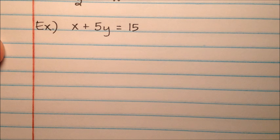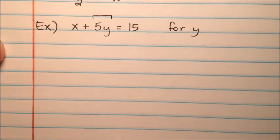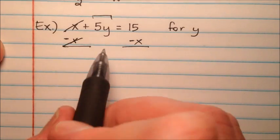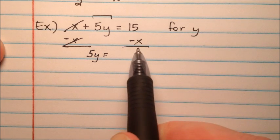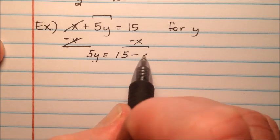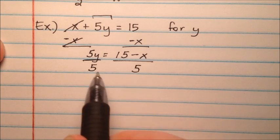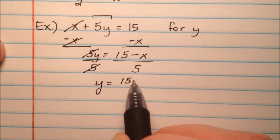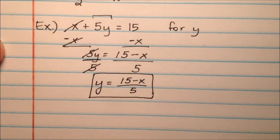In this next example, I have x plus 5y equals 15, and I'm going to solve for y. I need to get the 5y term all by itself. There's an x term on the same side, so I subtract x from both sides to get rid of it, leaving just 5y on the left. On the right, 15 and negative x are not like terms, so I write 15 minus x. Then I divide both sides by 5, and I get y equals 15 minus x all over 5.